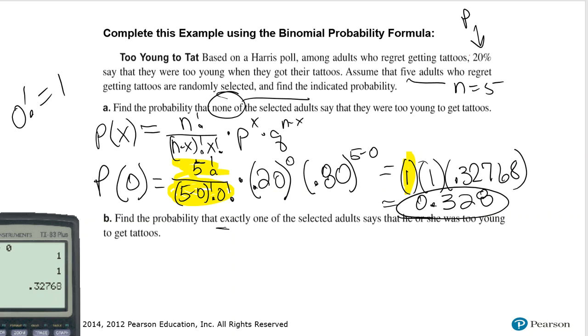I'm looking for the probability of exactly one. So my x is equal to one. n is still five. Little p is equal to 0.20. Little q is equal to 0.80.